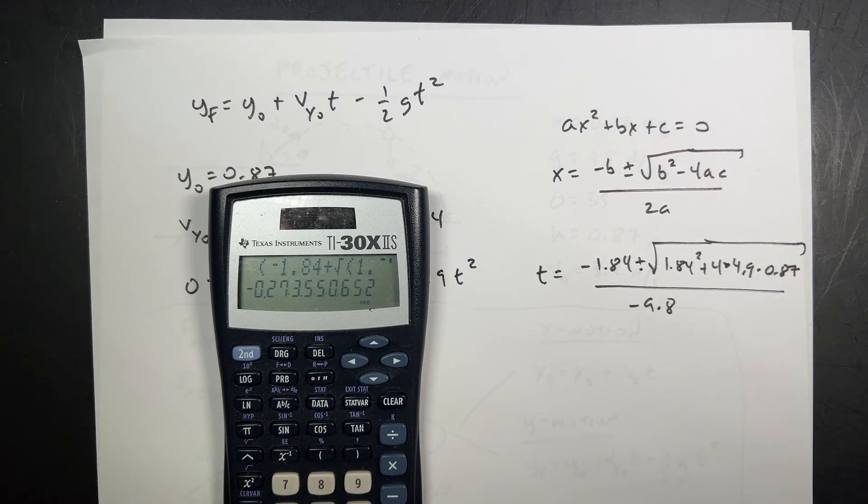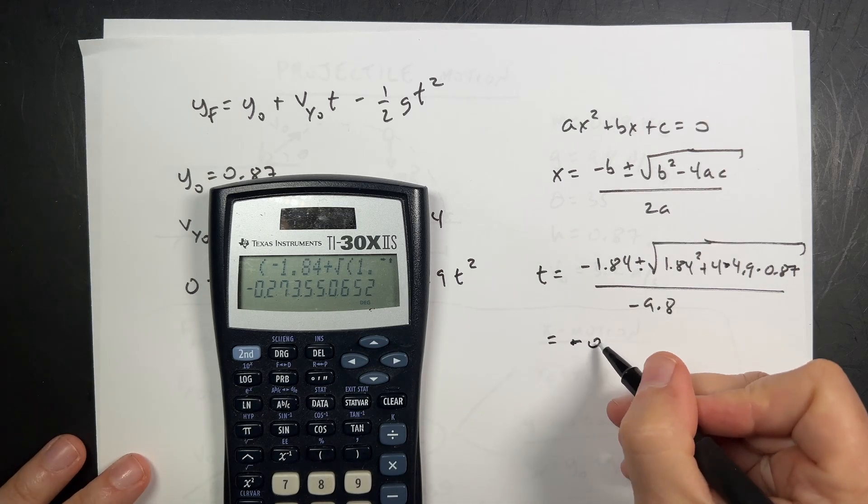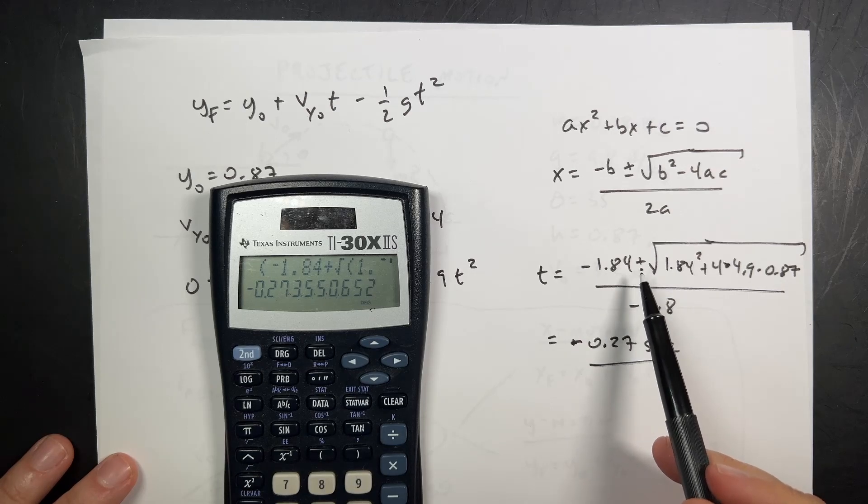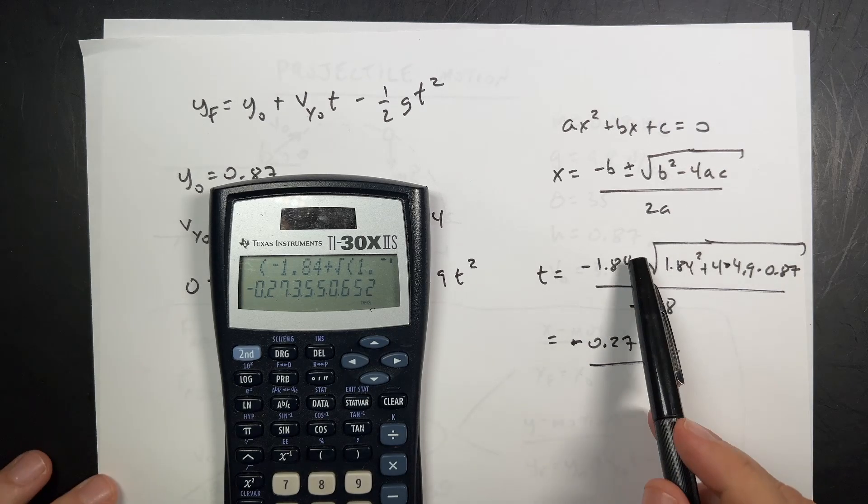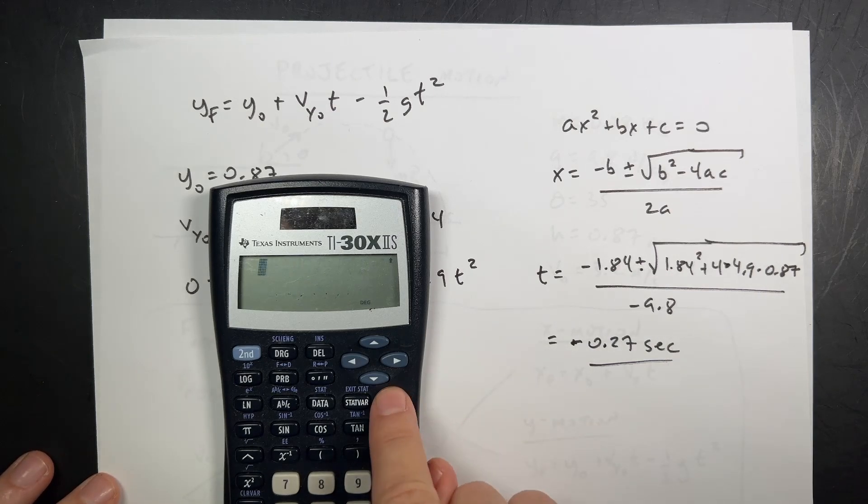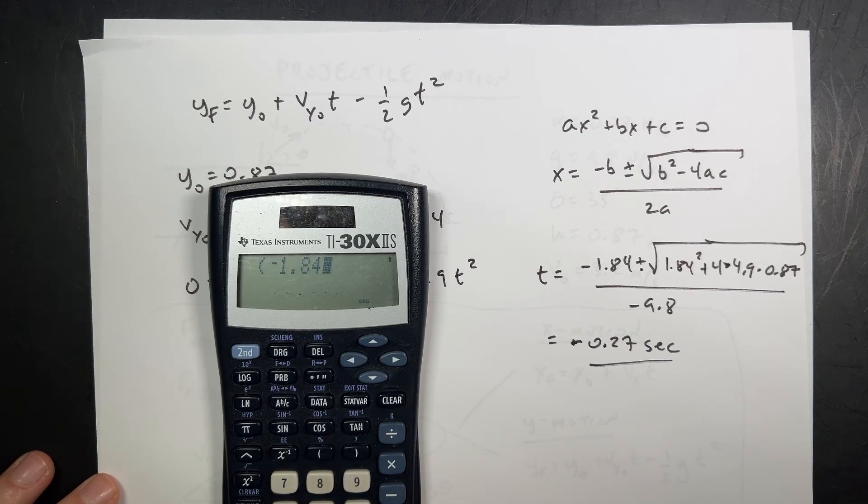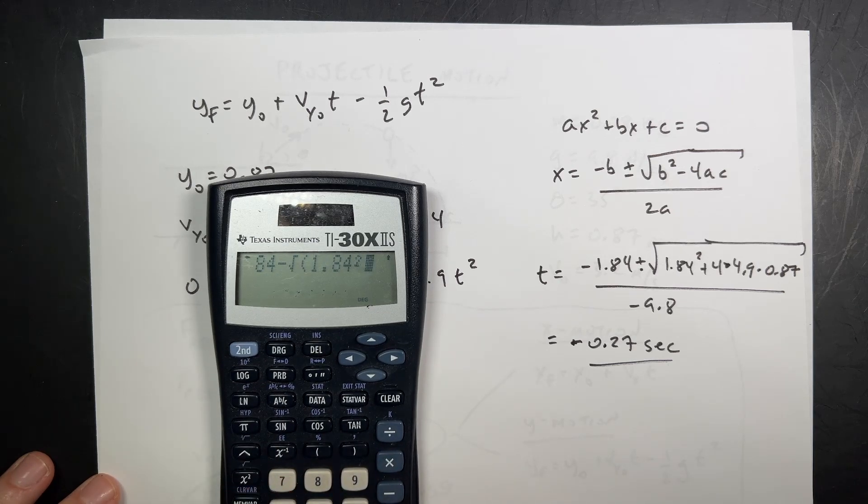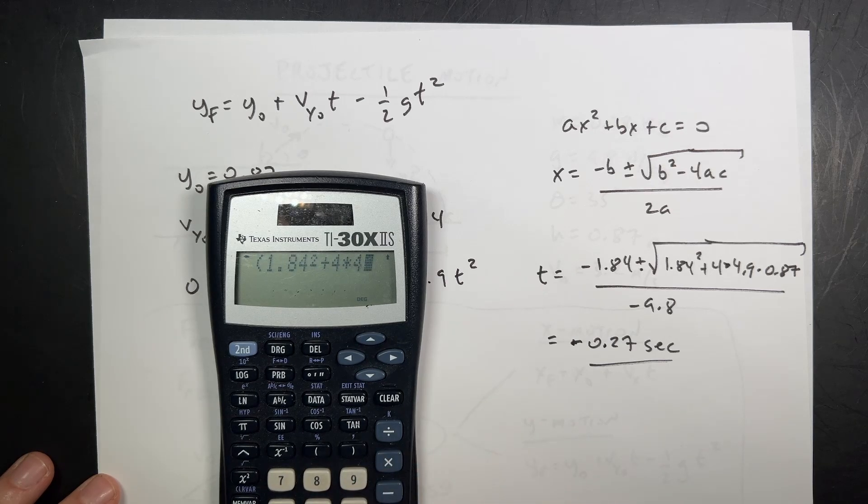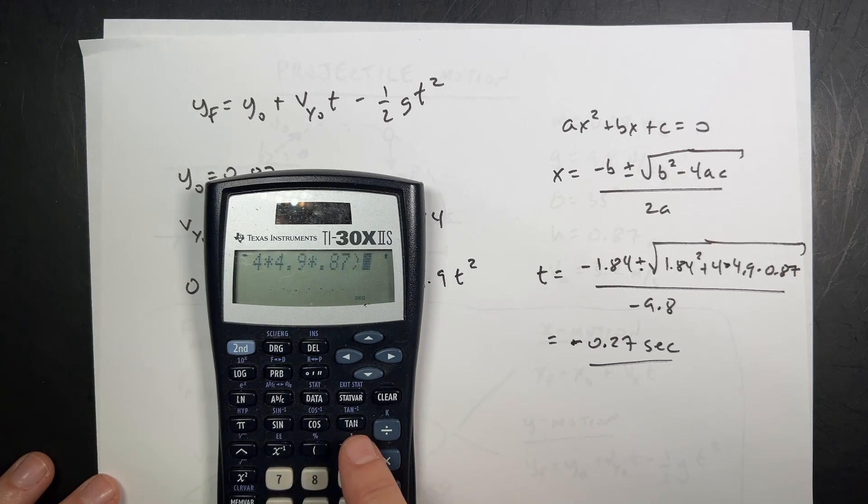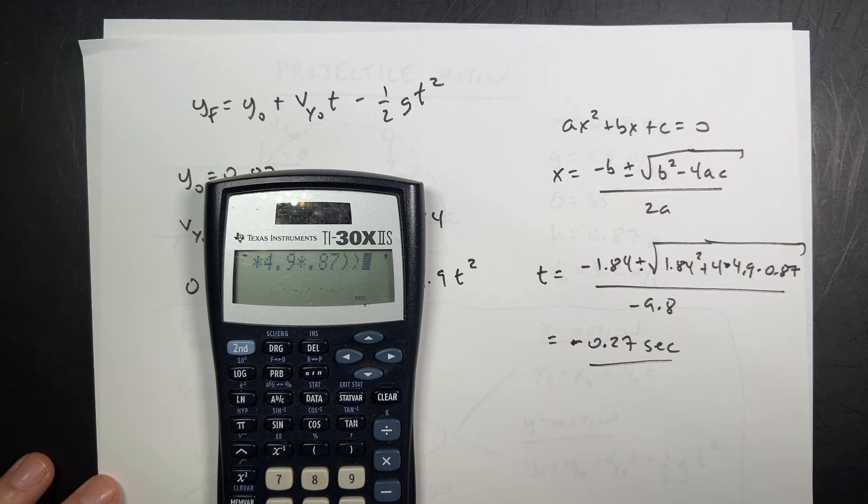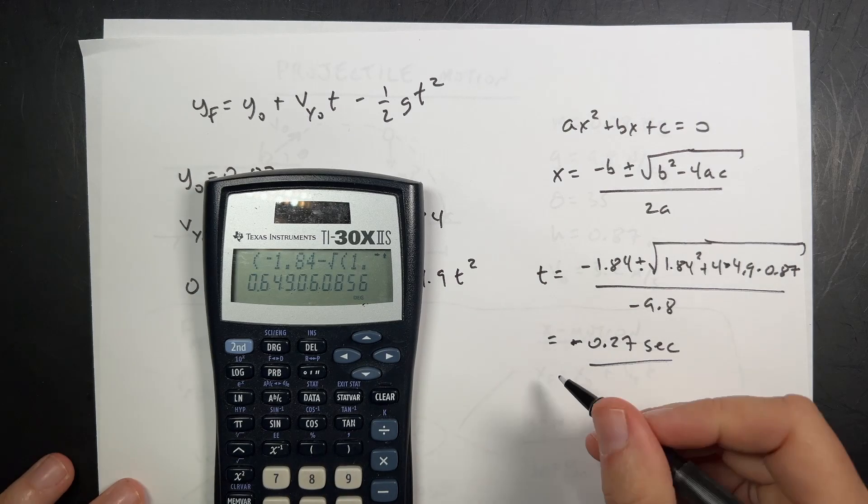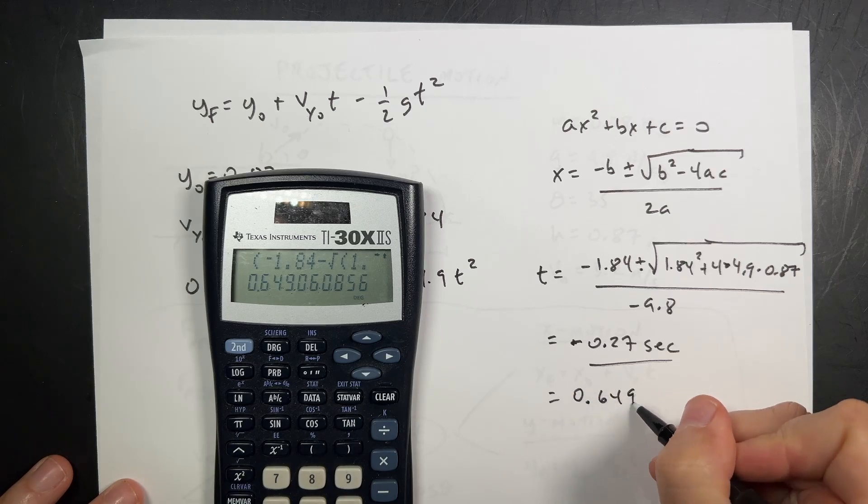And I get negative 0.27 seconds. Now, that's not good. We don't want a negative. So, let's go through here and do the same thing but replace this and put the minus sign there. So, I'm going to do the exact same calculation but I'm not going to have a plus. I'm going to have a minus. You get two solutions for the quadratic equation. Clear. Clear. Parentheses. Negative 1.84 minus square root 1.84 squared plus 4 times 4.9 times 0.87. Square root close parentheses. Numerator close parentheses divided by negative 9.8. And I get 0.6. 0.649 seconds.